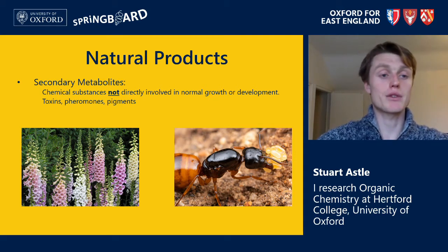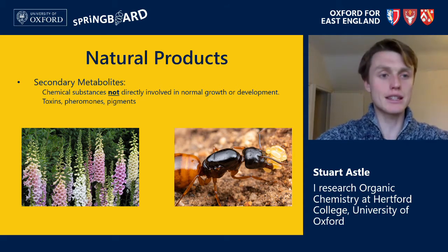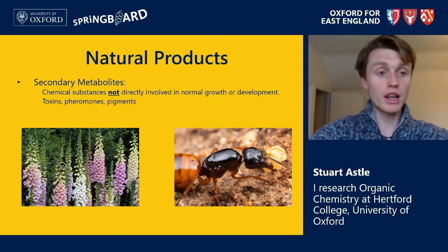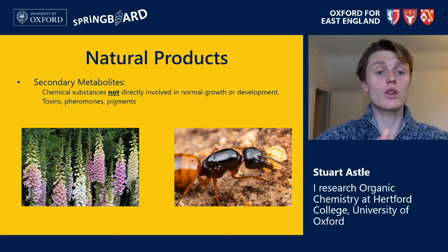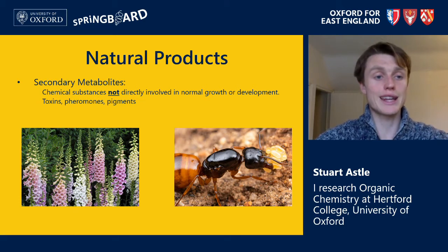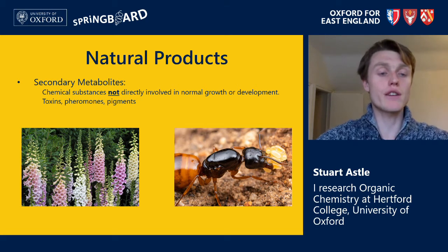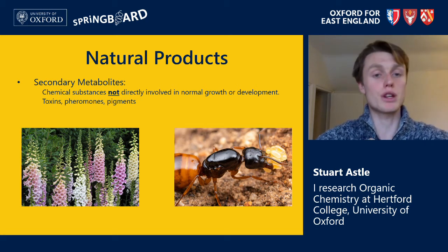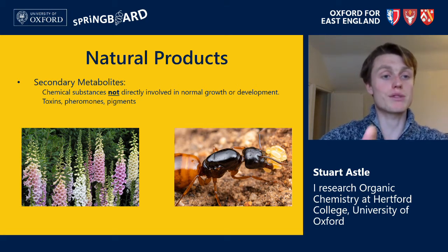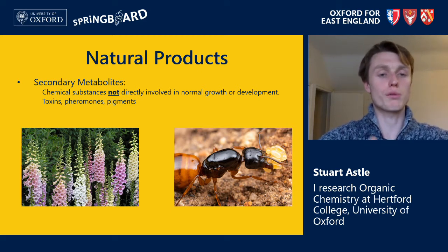Take the example of a toxin — a poisonous frog that produces a toxin in its skin, which means that if you eat it you will become ill and potentially die. Producing that toxin is not directly involved in the growth or development of the frog; the frog doesn't get bigger and stronger because of it. But by producing this toxin it discourages other organisms from preying on it, giving it a greater chance of surviving and reproducing. This is how this secondary metabolite conveys an evolutionary advantage.